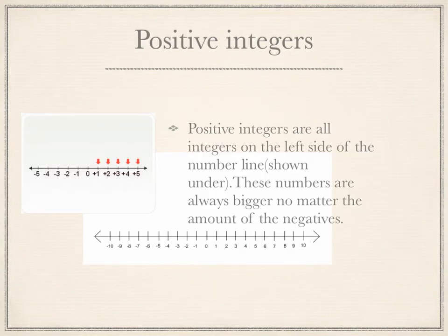Positive integers. Positive integers are all integers on the left side of the number line, shown under. These numbers are always bigger, no matter the amount of the negatives.